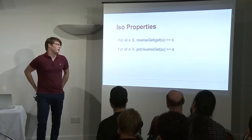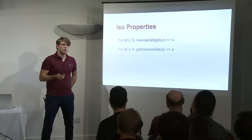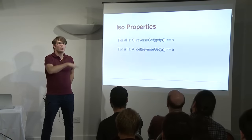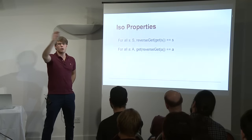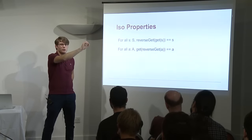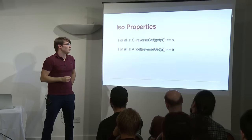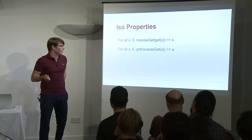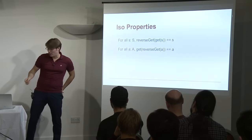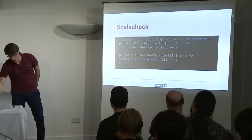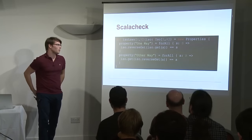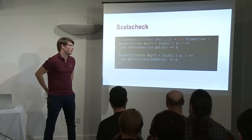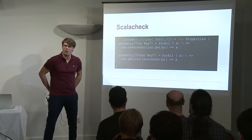Now let's come back to the properties. An ISO has two functions but also needs to satisfy two properties: you can round-trip from S to A and back. How can we implement this in Scala? We cannot prove it formally, but we can simulate it using property-based testing. This is an example using ScalaCheck, which is one library implementing property-based testing — another one is called ScalaProps.